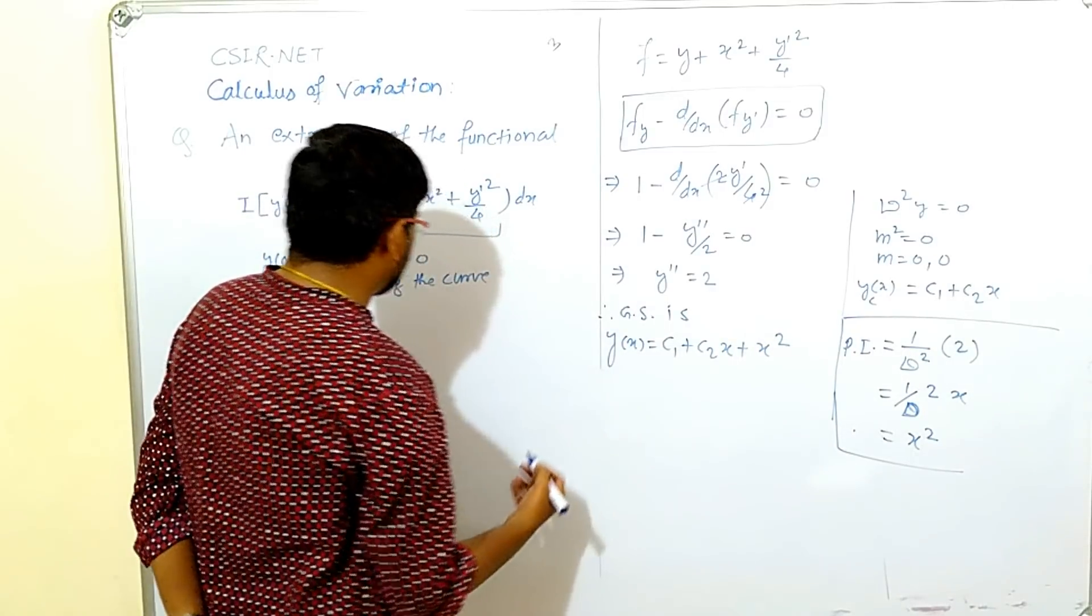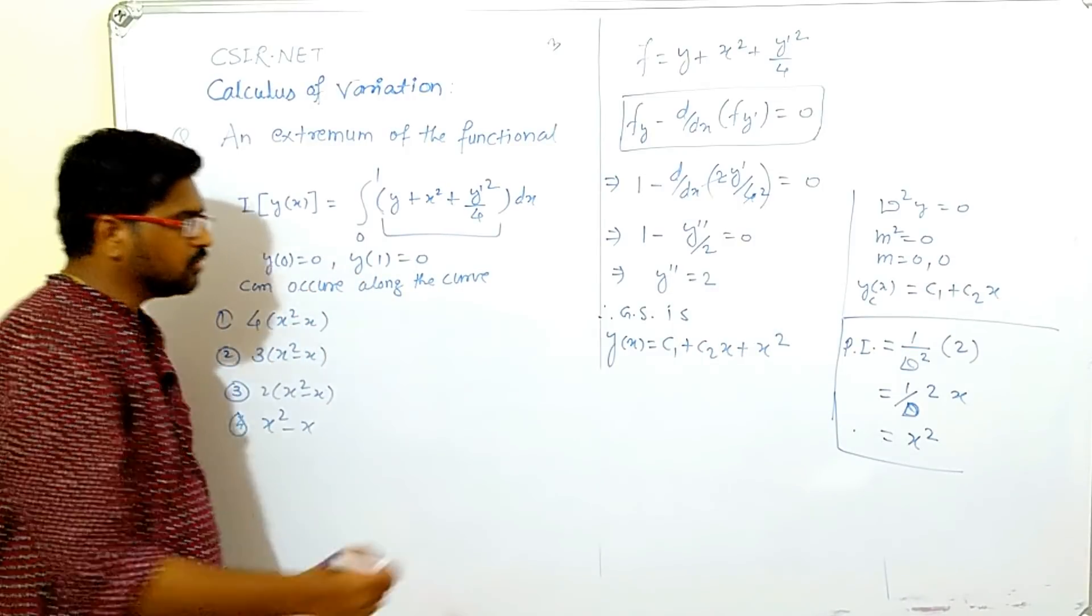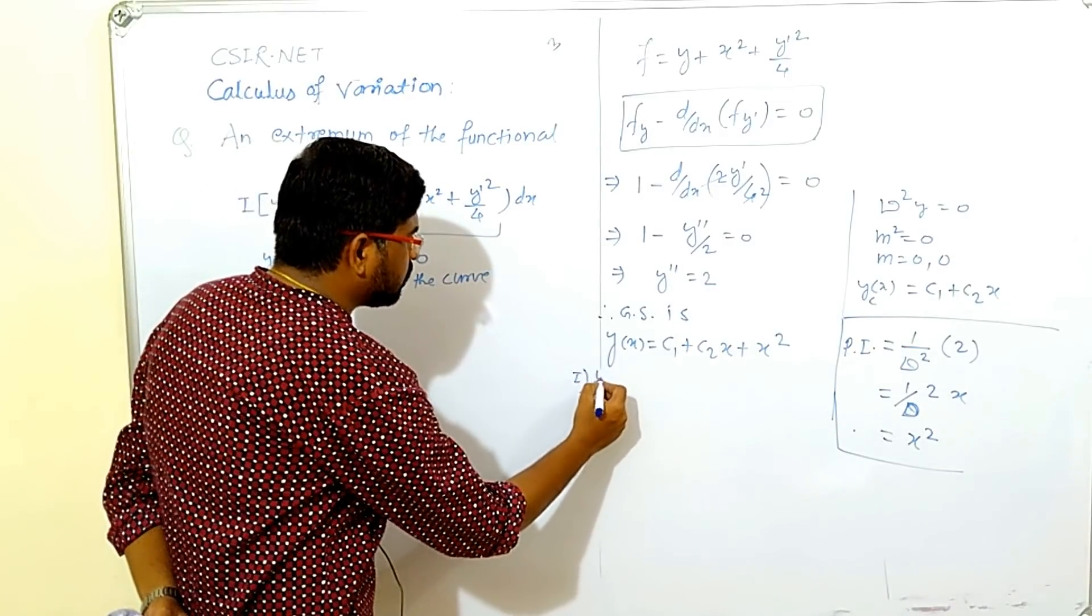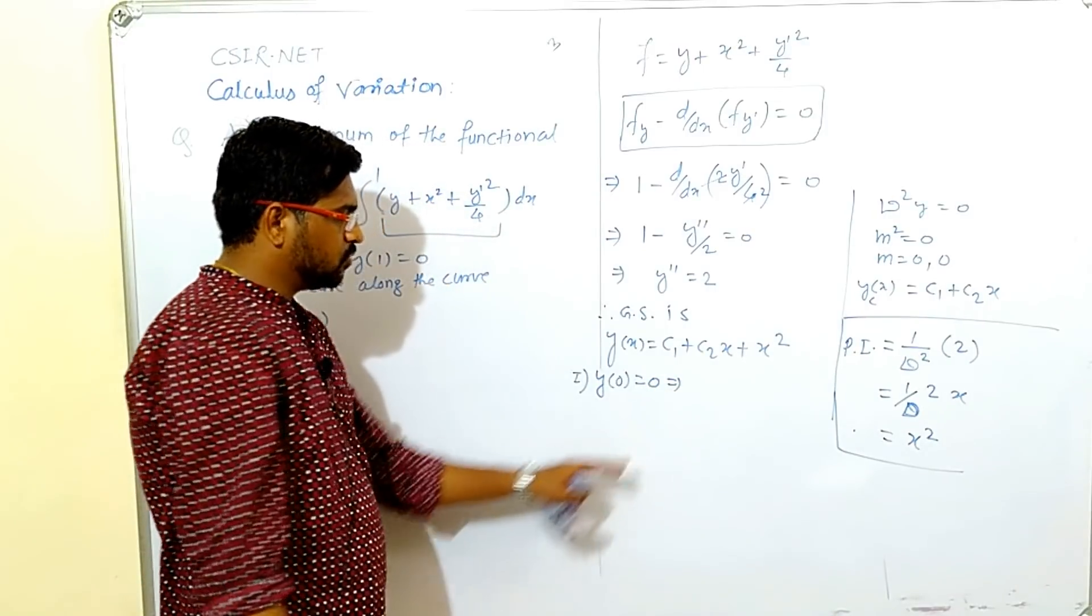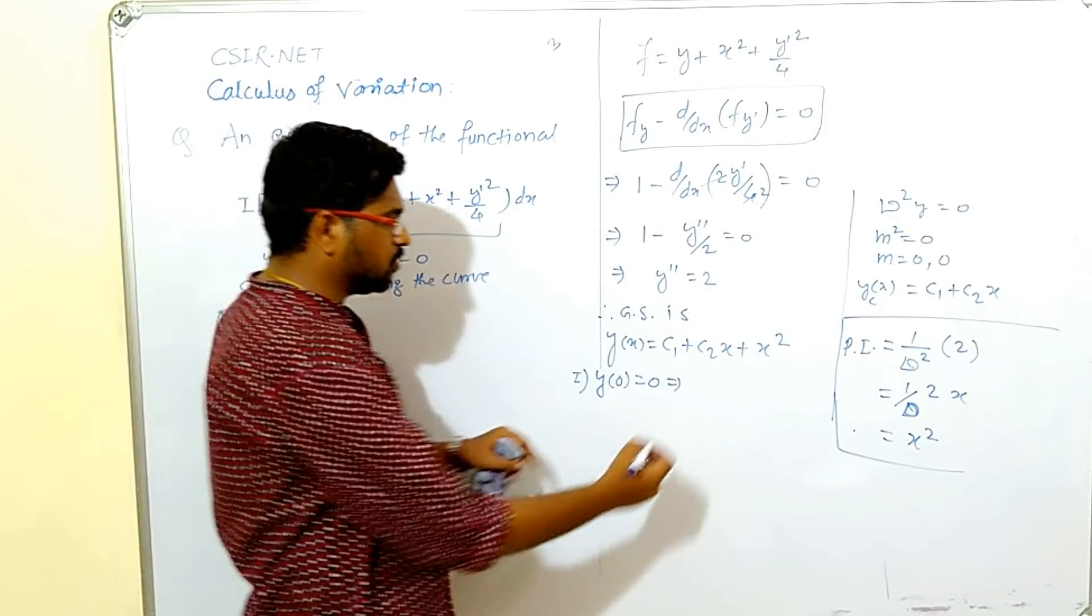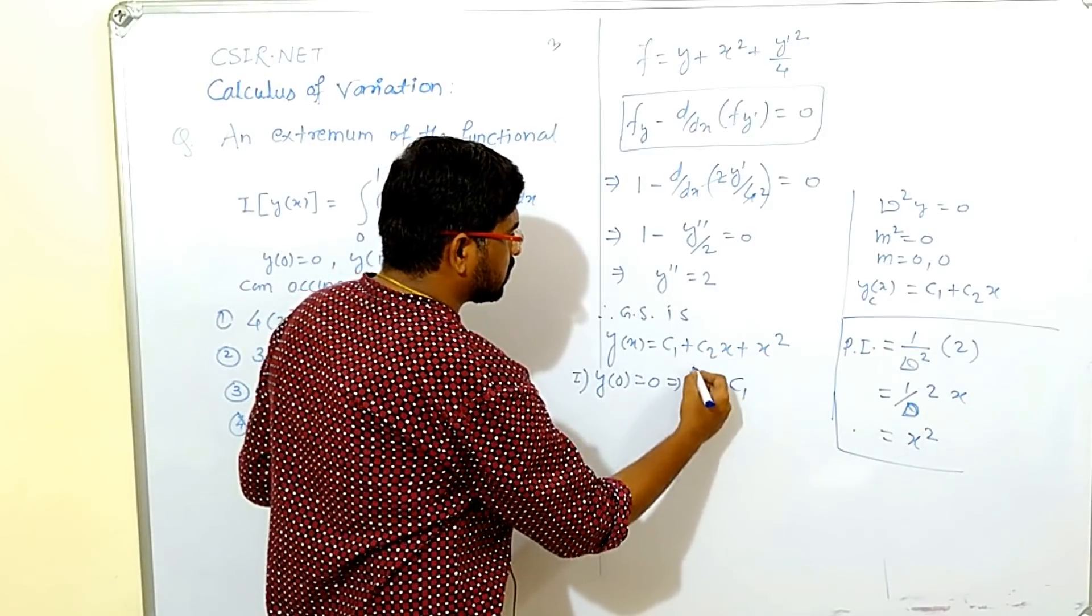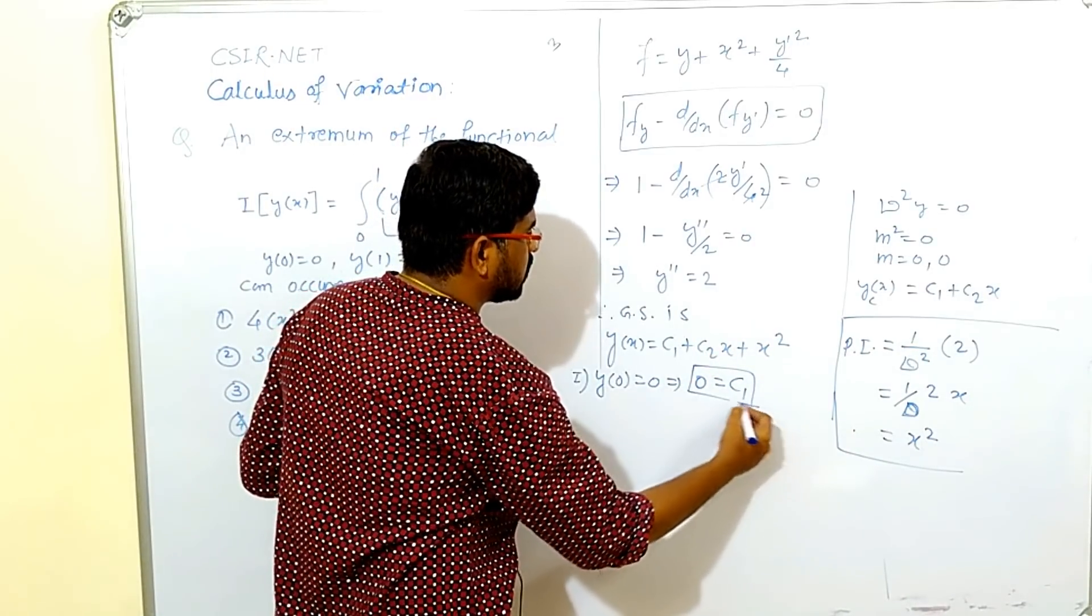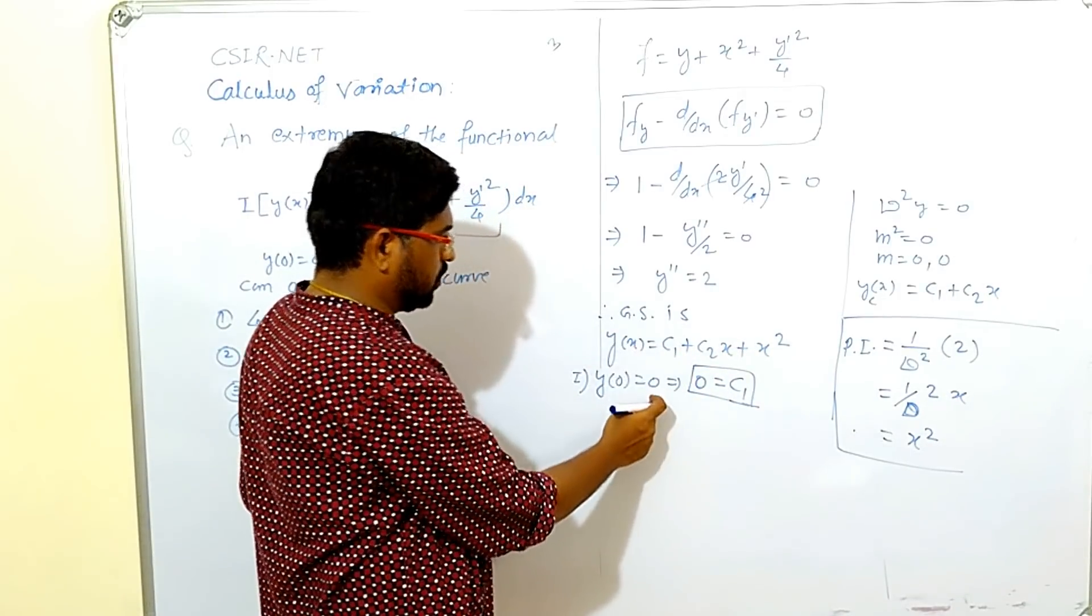Now we use conditions. Conditions given: y of 0 equals to 0 and y of 1 equals to 0. I use first condition y of 0 equals to 0, so y equals to 0 whenever x equals to 0. We get c1, I put x equals to 0, x equals to 0 only we get c1 equals to 0.